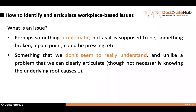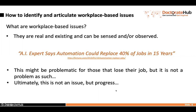An issue is something problematic and, unlike the problem, it is not really well understood. For example, AI experts say automation could replace 40% of jobs in 15 years — this might be an issue. It has something that shows a certain type of problematic, because if you lose your job it certainly will have impacts. But it is not a real problem at this point in time; there is potential for an issue, but it is still not realized.